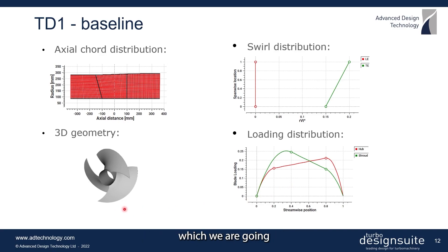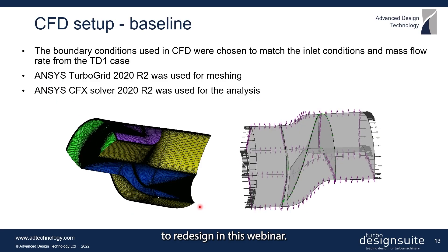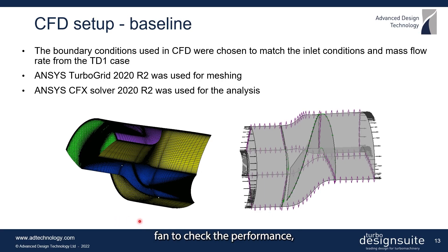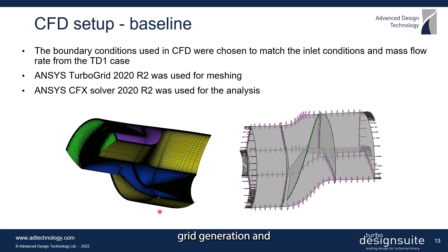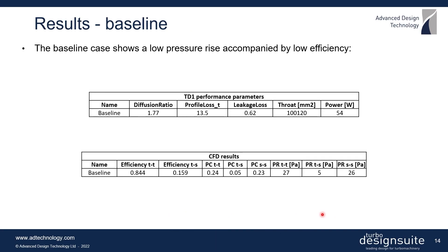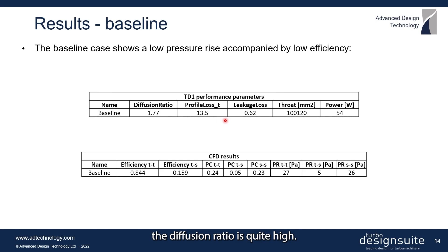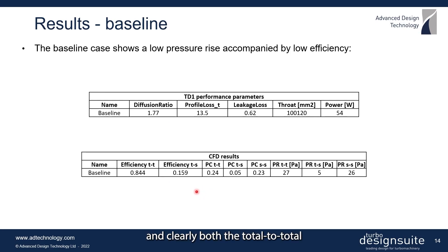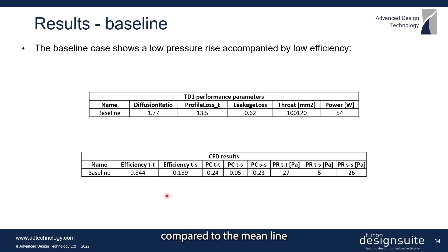These inputs result in the 3D geometry of the baseline fan which we are going to redesign. Before the redesign, a CFD analysis was run on the baseline fan to check performance. We used ANSYS TurboGrid for fully structured grid generation and CFX for the flow analysis. The results show that the diffusion ratio is quite high, and both the total-to-total and total-to-static efficiency levels are much lower compared to the mean line code estimation of about 92%.